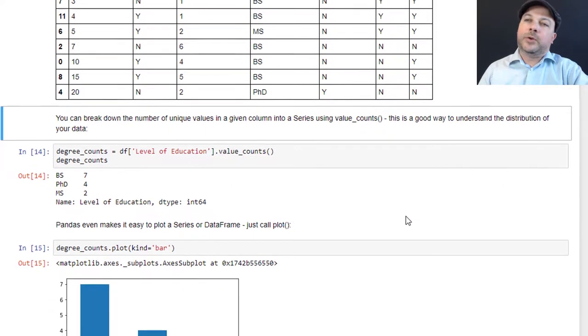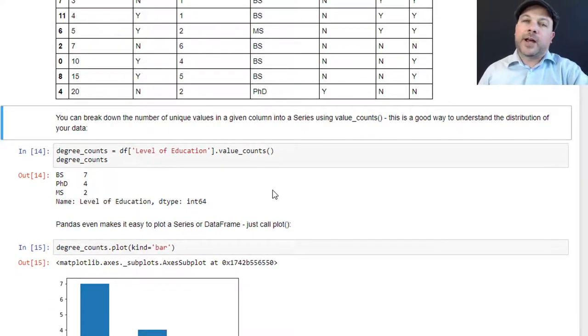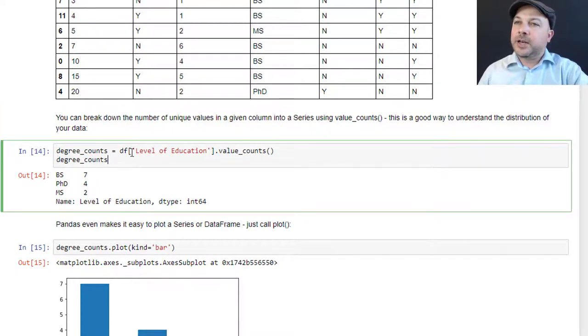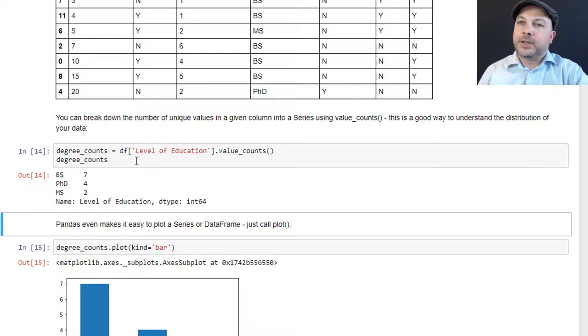We can also do value counts. That's a way of breaking down how many of each unique value exists, which can be a useful way to visualize your data, kind of look for weird values that might be outliers. All you need to do is say df and then the name of the column that you want to count on, dot value_counts, and that will give you a count of each unique value within there. Let's say we want to create a value count series out of the level of education column in our data frame, and then we'll go ahead and print that out. We get back this result which indicates that in our entire data frame there are seven BS degrees, four PhD degrees and two MS degrees.